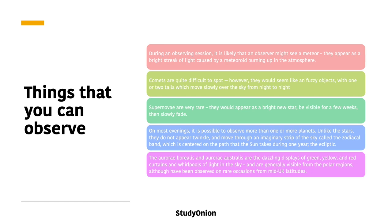Another thing you could possibly see is a comet, but comets are actually quite difficult to spot. They would appear as a fuzzy object with one or two tails — an ion tail and a dust tail — which moves slowly across the sky from night to night.